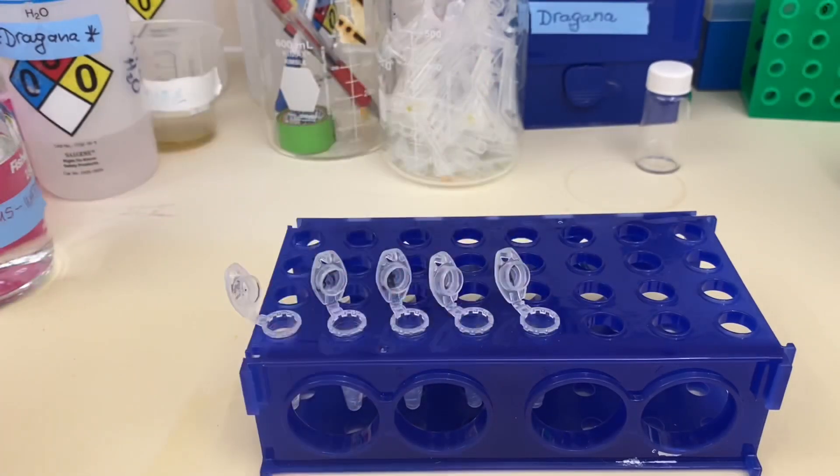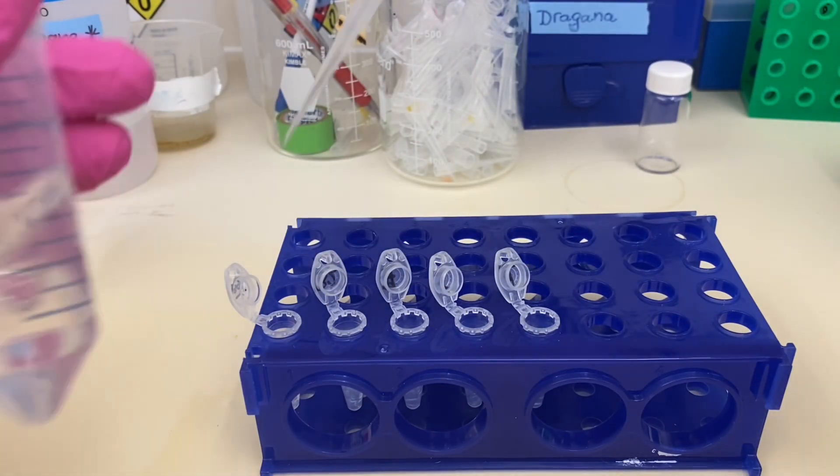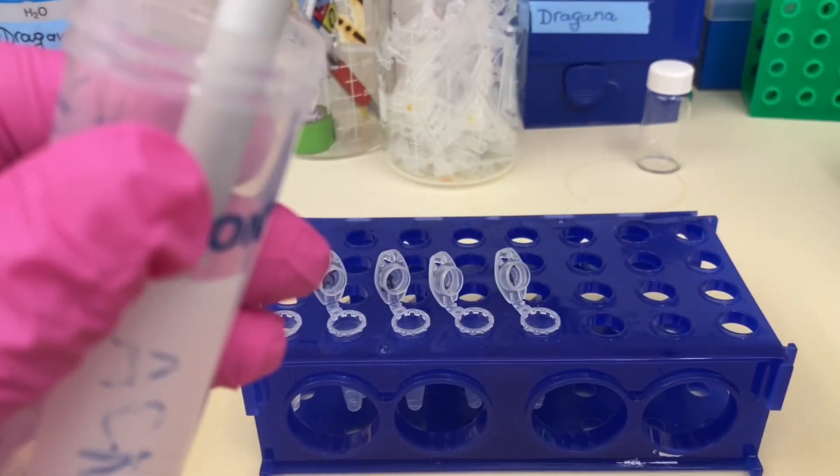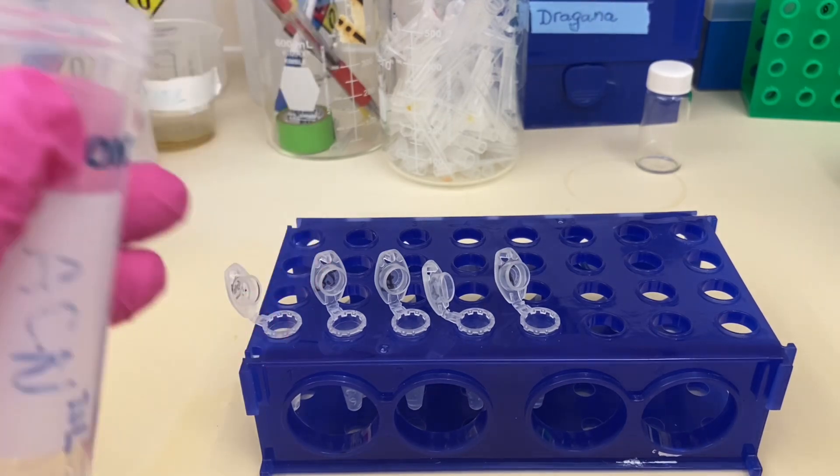After the alkylation step is over, I'm going to remove the liquid from the tubes, I'm going to add ACN, wait for 5 to 10 minutes and then I'm going to remove it.